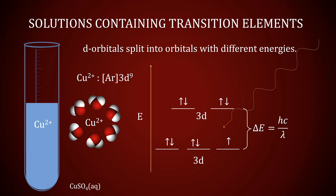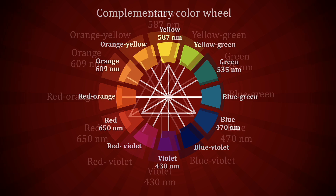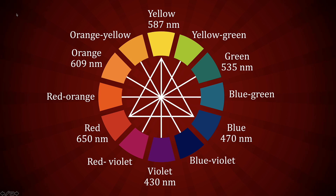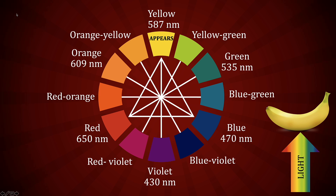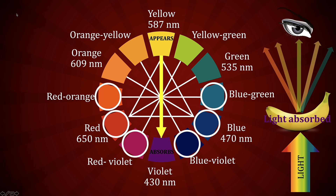But what does this have to do with color? The diagram on the screen is called a complementary color wheel, which is very useful in explaining the phenomenon of color. Consider an object like a banana, which of course appears yellow. The reason it appears yellow is because it absorbs the color that is complementary to yellow — that being violet — as well as other colors around violet to lesser and lesser degrees. Whatever is not absorbed is transmitted back to the observer's eye, so the object appears mostly yellow.